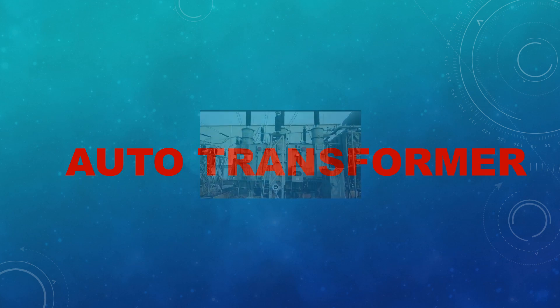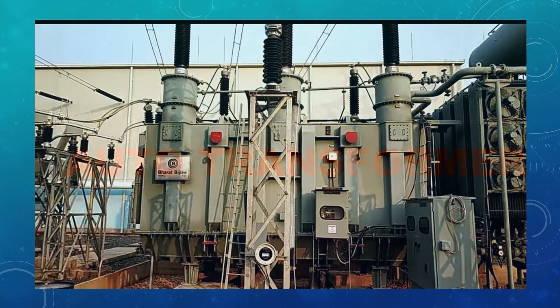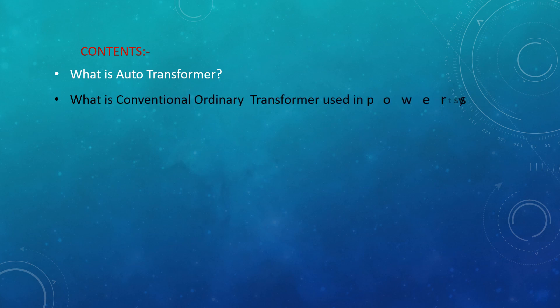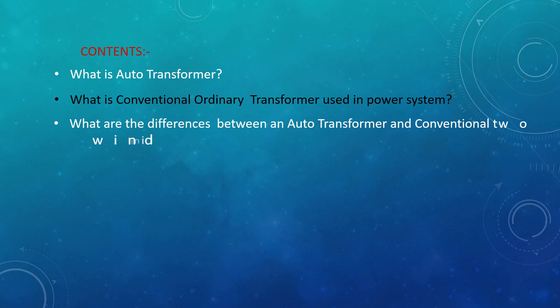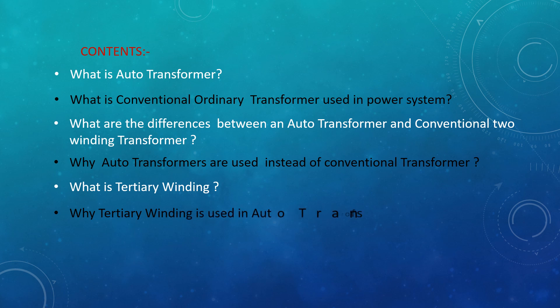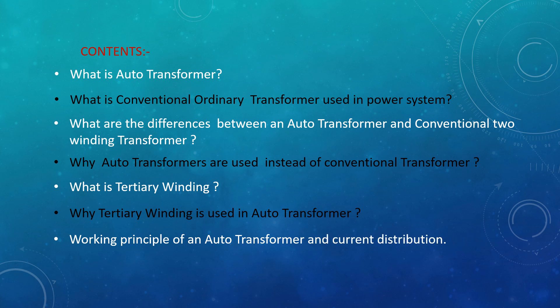Dear viewers, the subject of discussion is auto transformers used in power systems. Today I shall discuss: what is an auto transformer, what is a conventional ordinary transformer used in power systems, what are the differences between an auto transformer and a conventional two-winding transformer, why auto transformers are used instead of conventional transformers, what is tertiary winding, why tertiary winding is used in auto transformers, and the working principle and current distribution of an auto transformer.